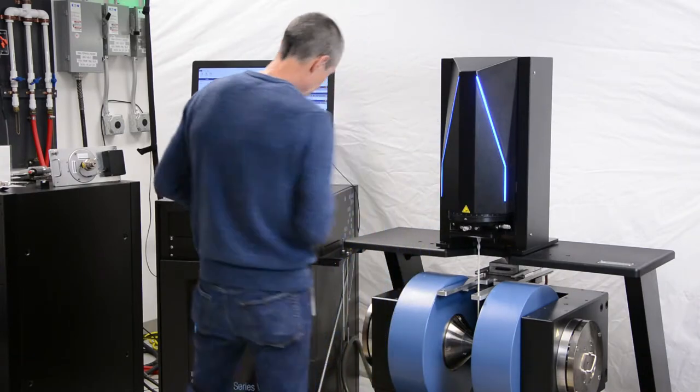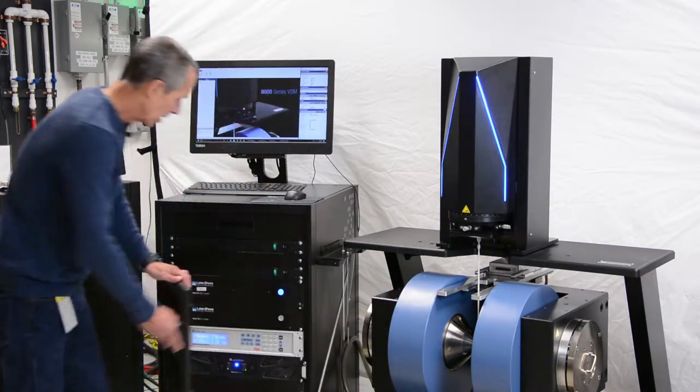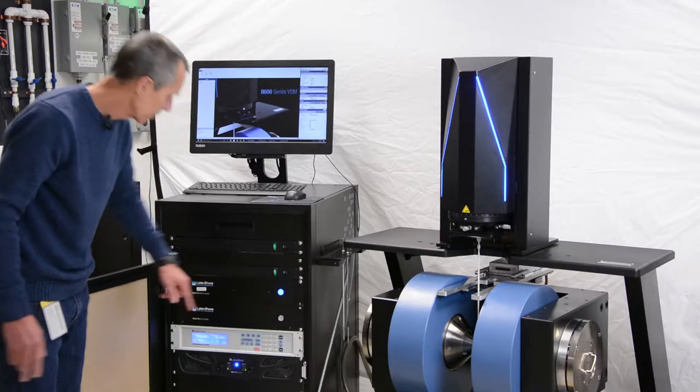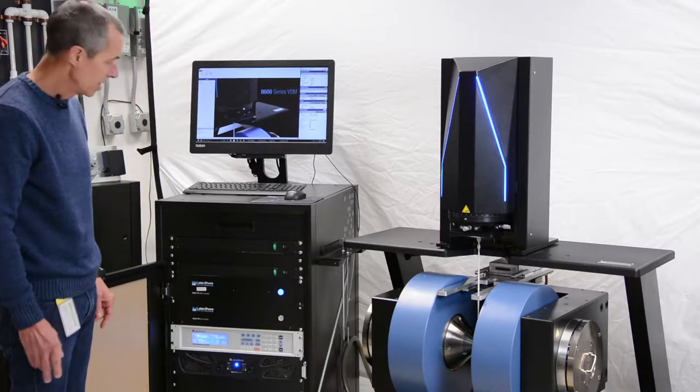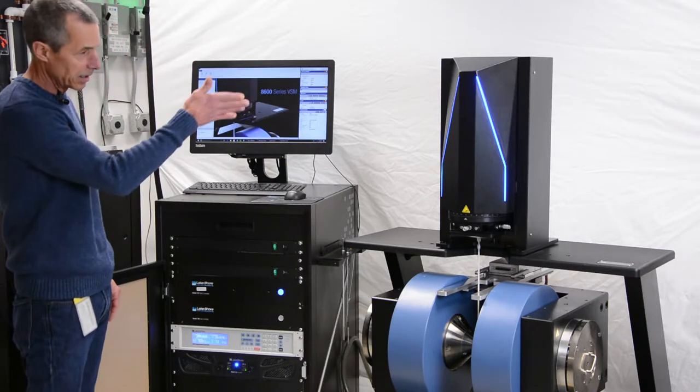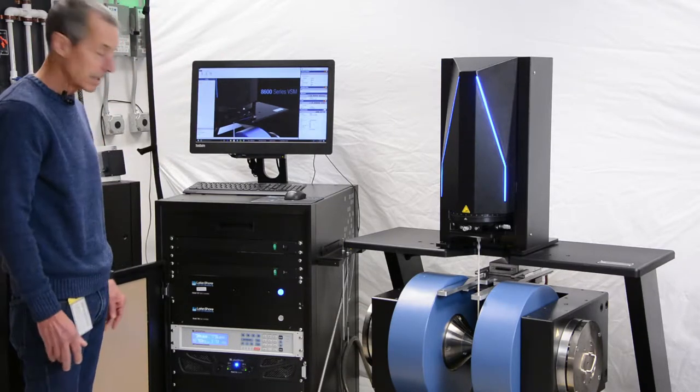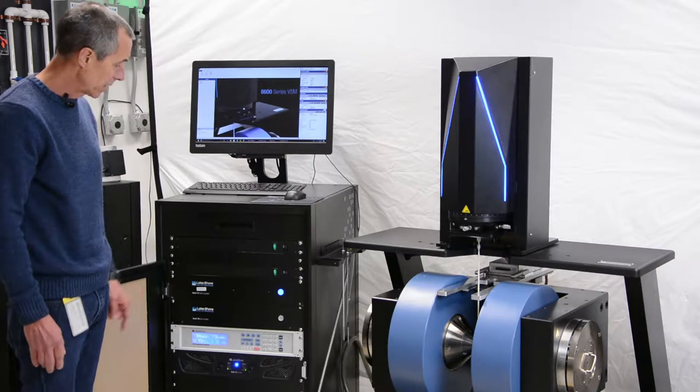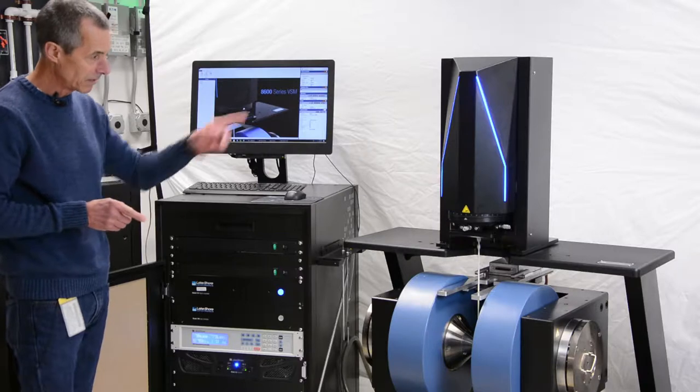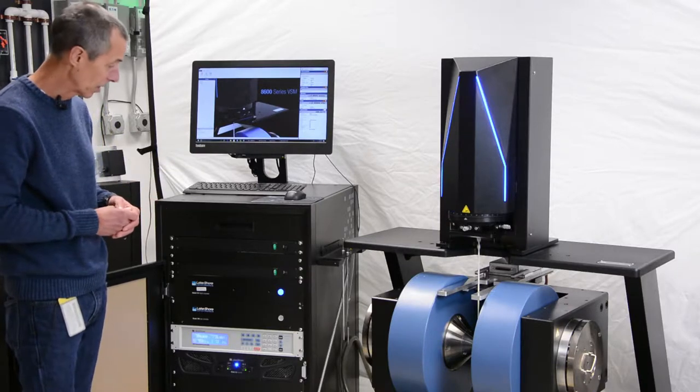On the instrumentation console, we have a variety of different electronics. We have the model 737 VSM controller. Inside this box is the electronics that drive the VSM head and there's also a narrow bandwidth lock-in amplifier that is tuned to the drive frequency of the VSM head, which is 82 Hertz.